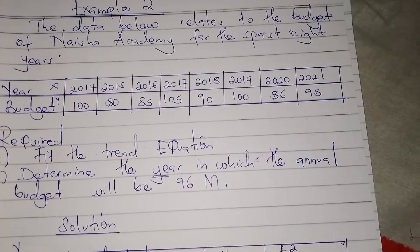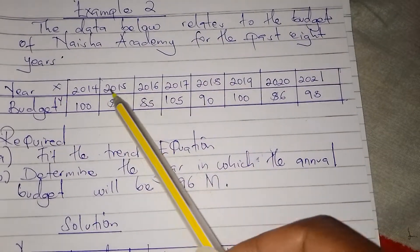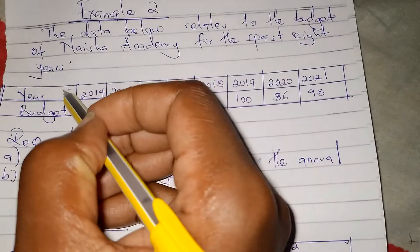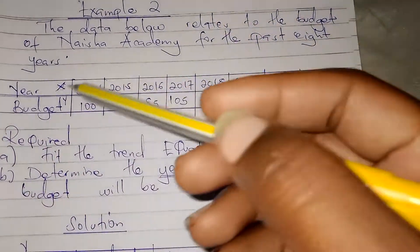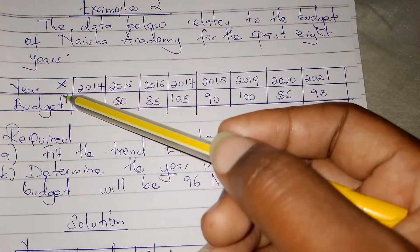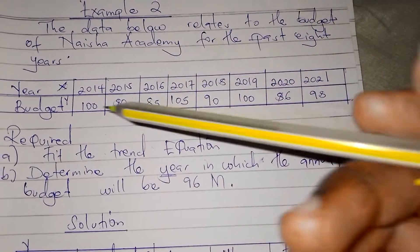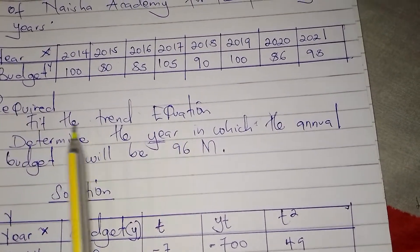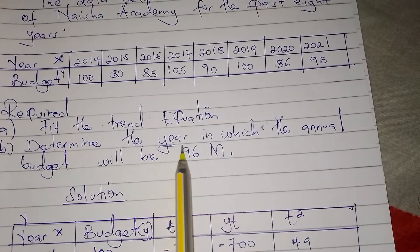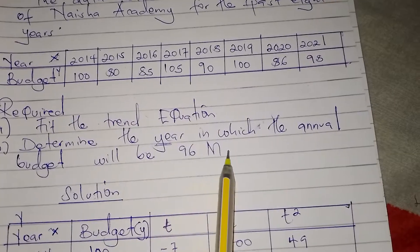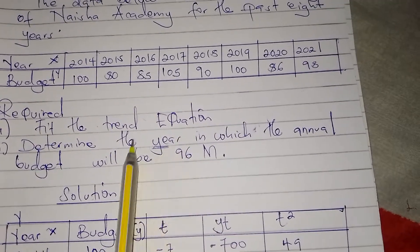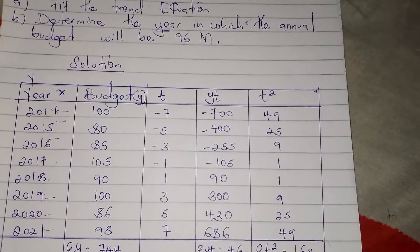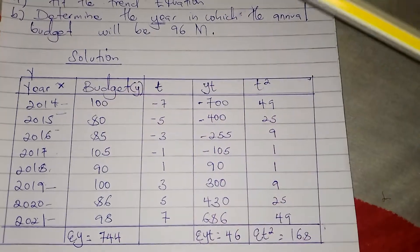In time series, time is always the independent variable, so the year is X and the other remaining variable becomes Y — so the budget becomes our Y. They require us to fit the trend equation and then determine the year in which the annual budget will be 96M. Just know this is time series.